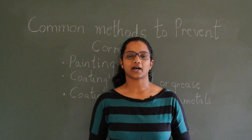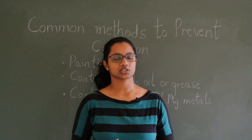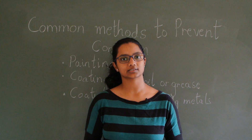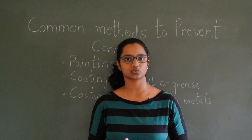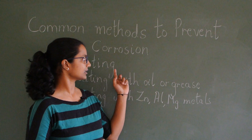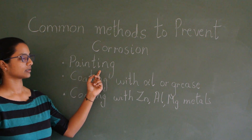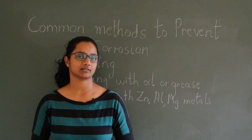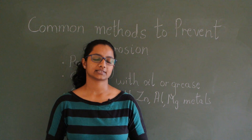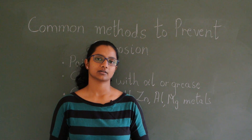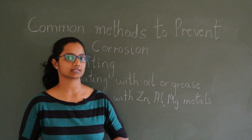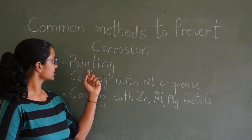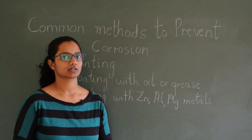Corrosion causes a lot of damage and loss. To prevent corrosion, there are several remedies and preventive methods. The first and very common one is painting. A good example in our day-to-day life is window grills — they are painted. Iron gates, cycles, and vehicles are all painted to minimise corrosion. Painting is a very cheap and effective method.